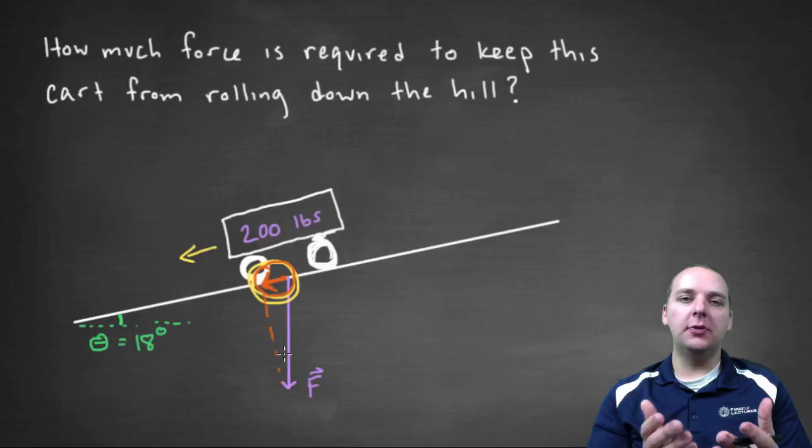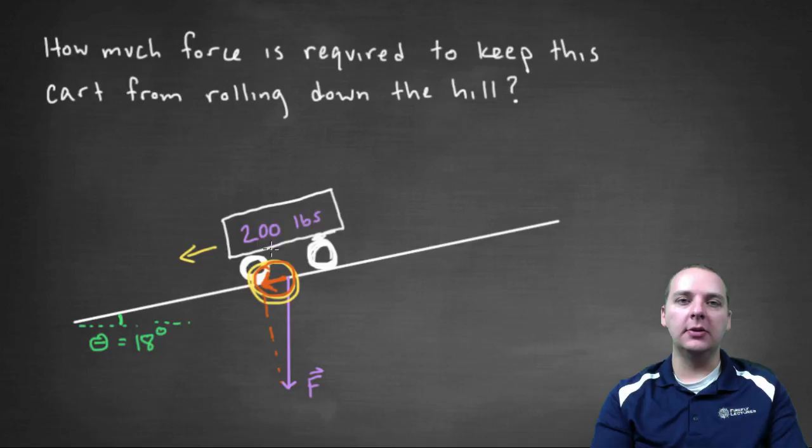If we can compute the magnitude of this orange vector, that's how much force we're going to have to match pushing in the opposite direction to keep it where it is and not let it roll down the hill.